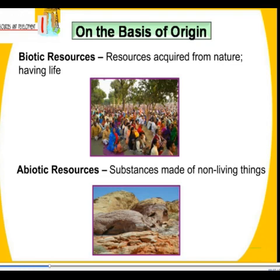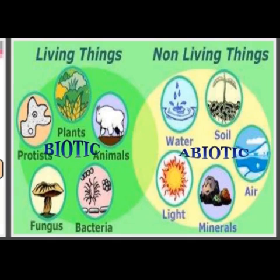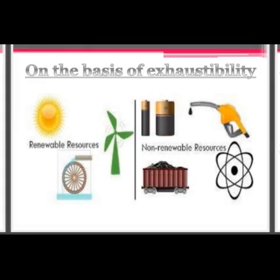On the basis of origin, resources can be biotic and abiotic. Biotic resources are obtained from the biosphere and they have life — for example, human beings, flora, fauna, livestock, etc. On the other hand, abiotic resources are composed of non-living things, for example rocks and metals. You can very well see in the picture the biotic and abiotic resources around us, consisting of living things and non-living things.